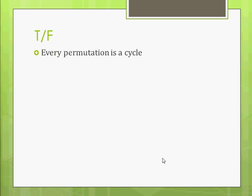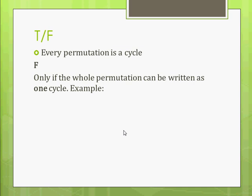True-false questions. Every permutation is a cycle. What do you think? It's false. Remember, only if it can be written as one cycle, is it a cycle. So, example here. We can write this permutation as a cycle. So, it's a cycle. The permutation is a cycle.